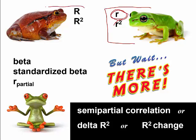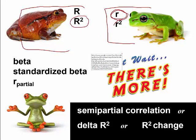For the question of what is the effect of all the variables taken together, we use the squared statistic — capital R squared, the squared multiple correlation — as our effect size. We then test the significance of that with an F statistic.